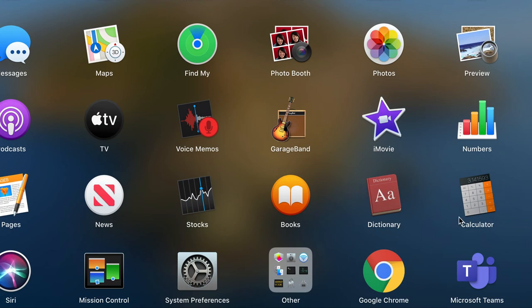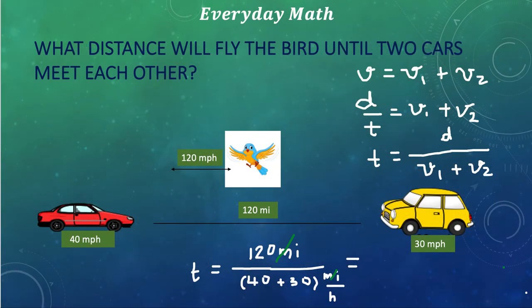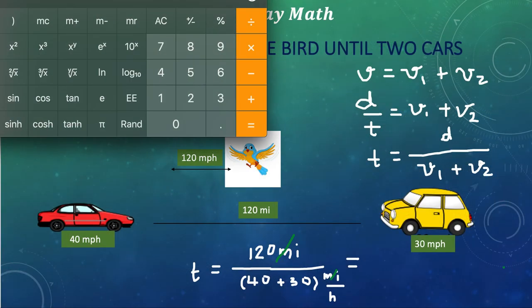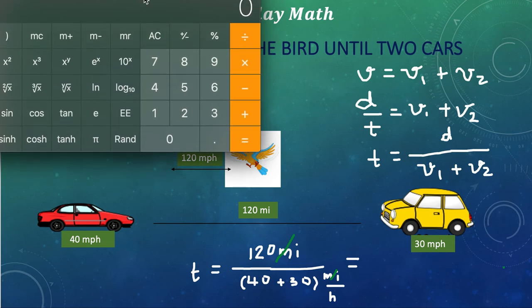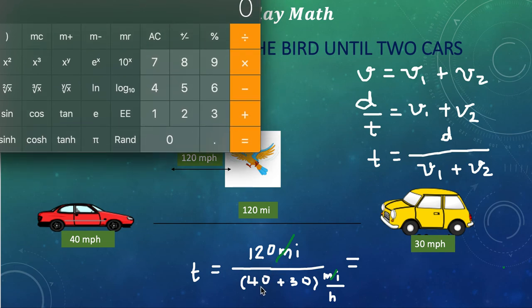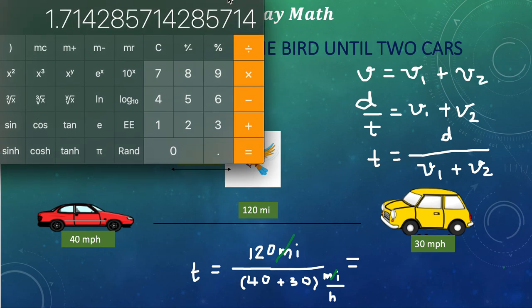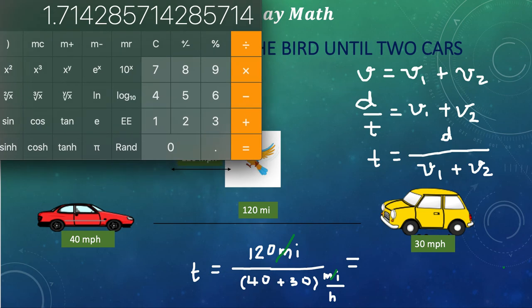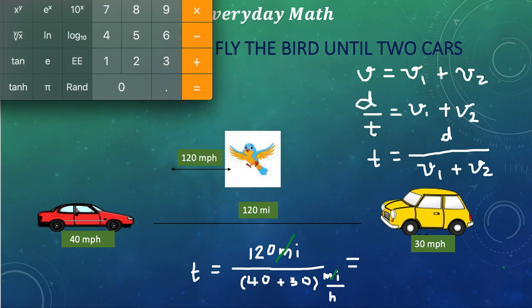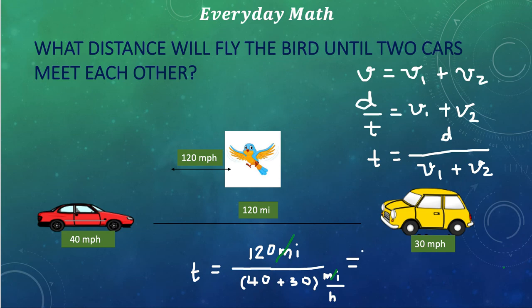Let me take a calculator. It is easy here. I have 120, but down is 40 plus 30 is 70. So, 120 divided by 70, and what do I get? I get 1.71 hour. So, the time is approximately 1.71 hour. So, we found the time.